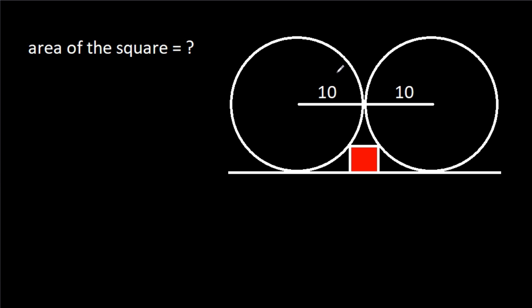In this video, we have been given two circles of radius 10 and a square between them. We have to find the area of the square.